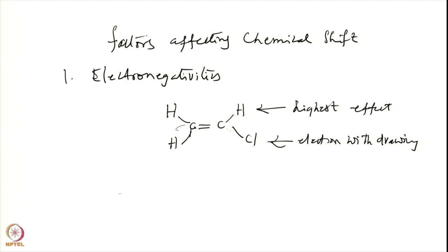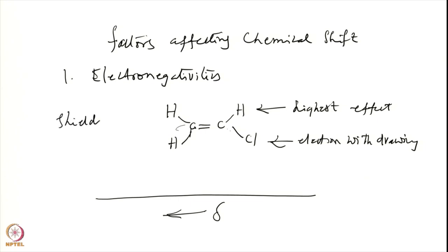We write the chemical shift as a plot of frequency. If at a particular position the electron density is low, it is called deshielding; if electron density is higher, it contributes to the shielding effect. So: electrons present → shielding effect; electrons withdrawn → deshielding effect.